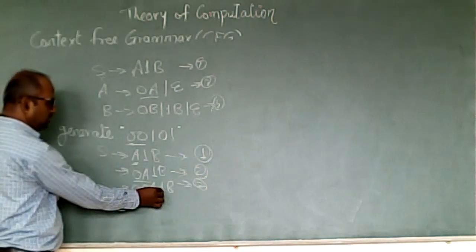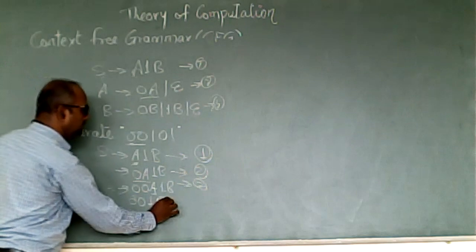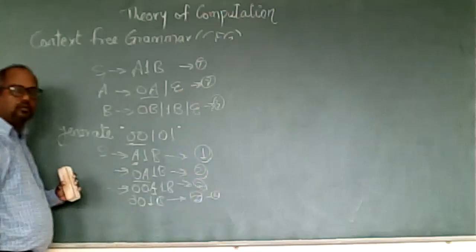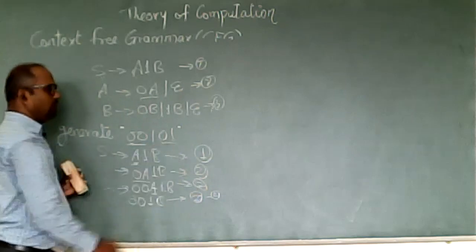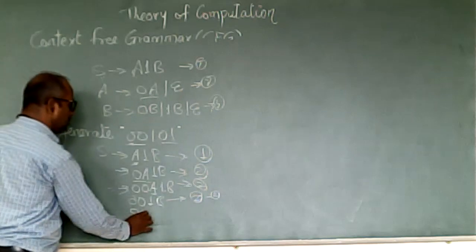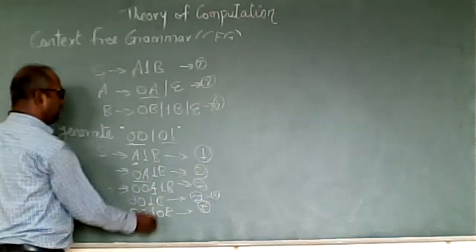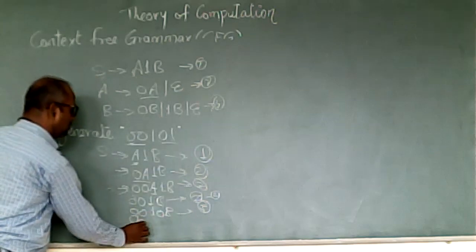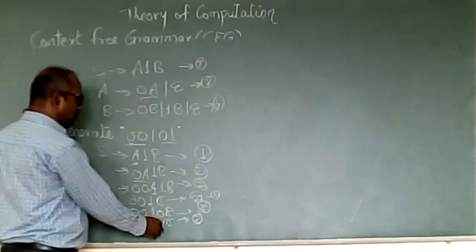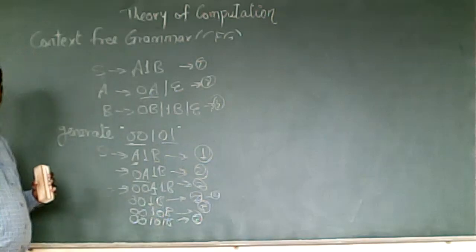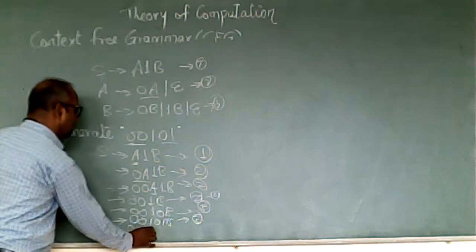Now two zeros are done. We want a 1 next, and the 1 is already present. So we replace A with epsilon using production 2, giving us 001B. Now using production 3, B is replaced with 0B, giving 0010B... wait — 001 0 1 B. Then the last B is replaced with epsilon, giving the final string 00101.